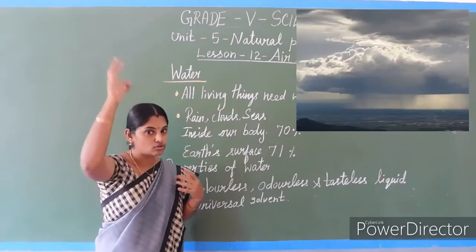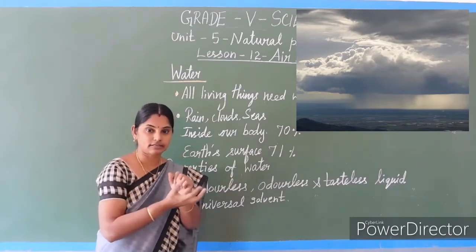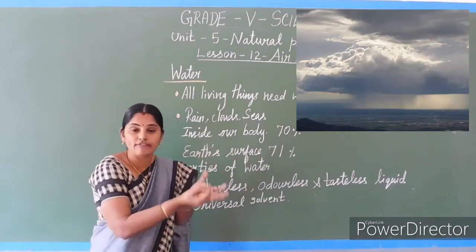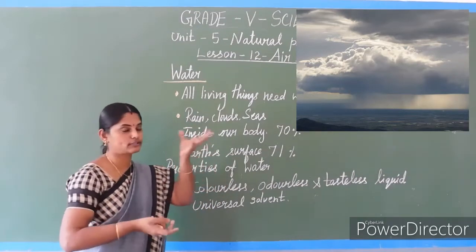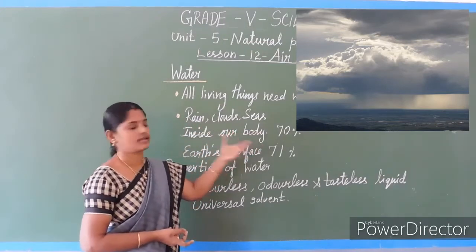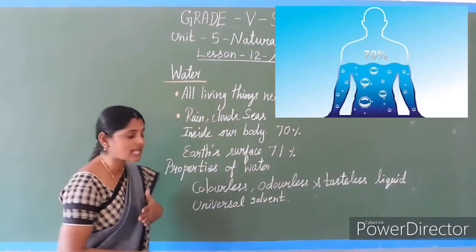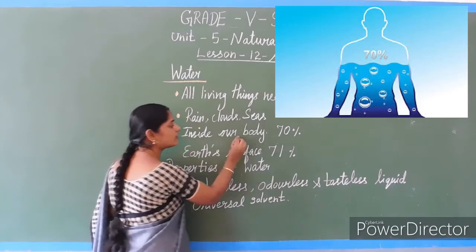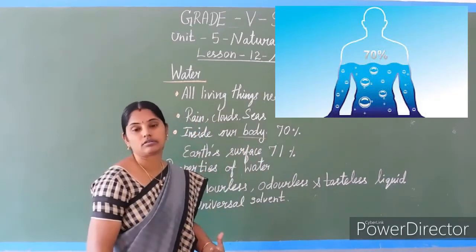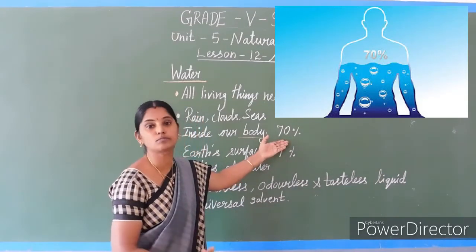Clouds also have water. Water is there in clouds, isn't it? We see that rain clouds are black in colour because there is heavy water and humidity there, so it looks black in colour. Water is also present inside our body. 70 percent of our body weight is made up of water.